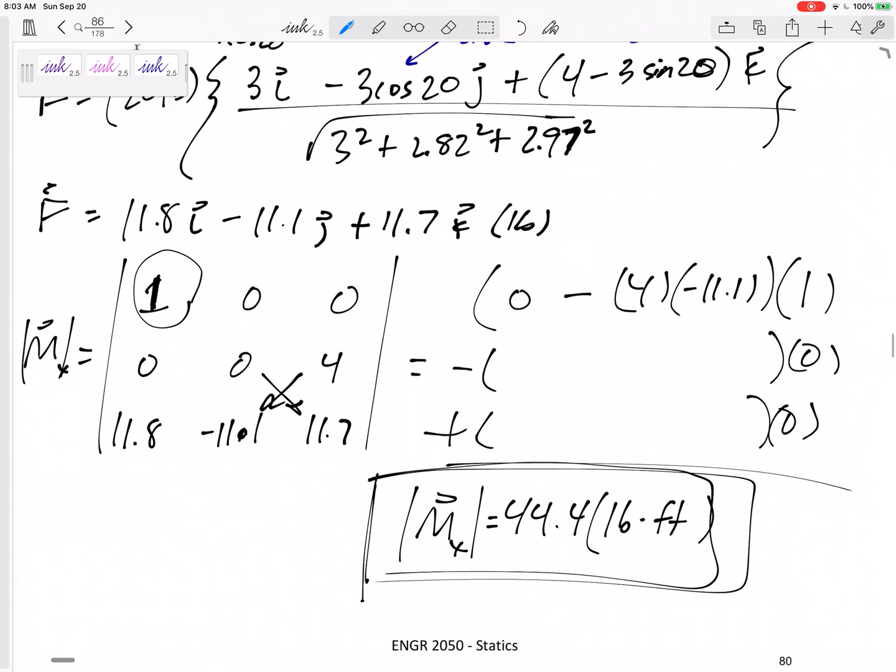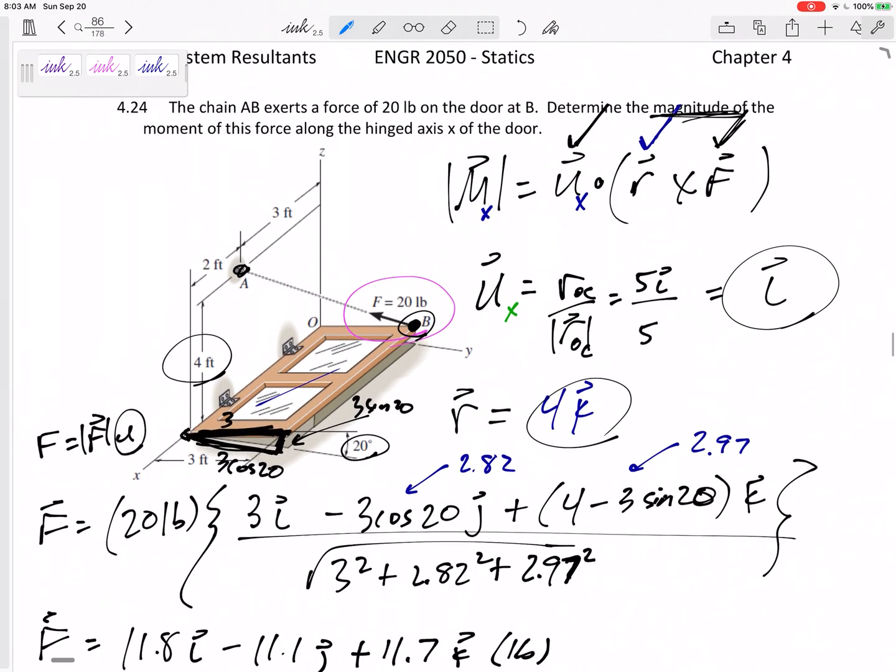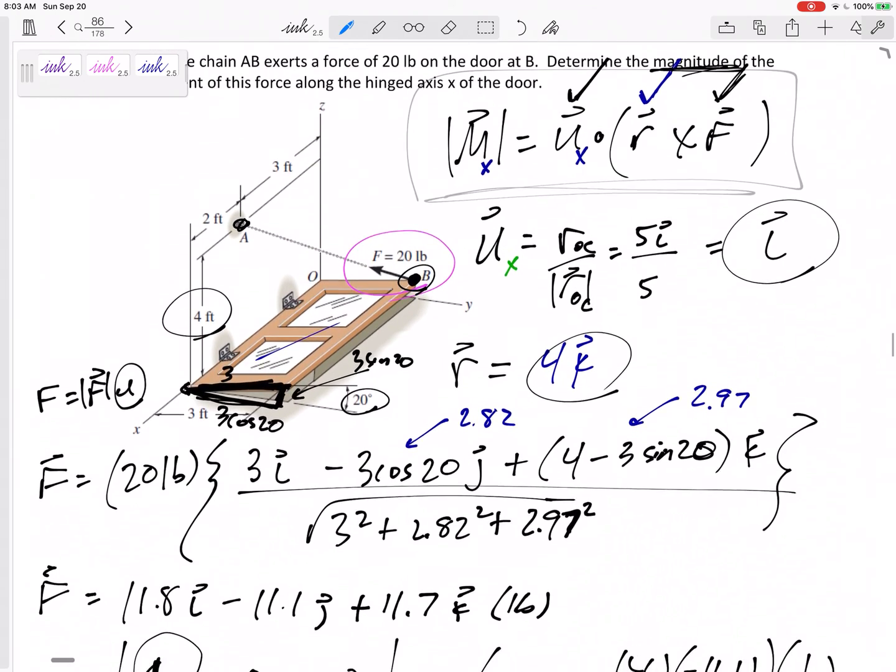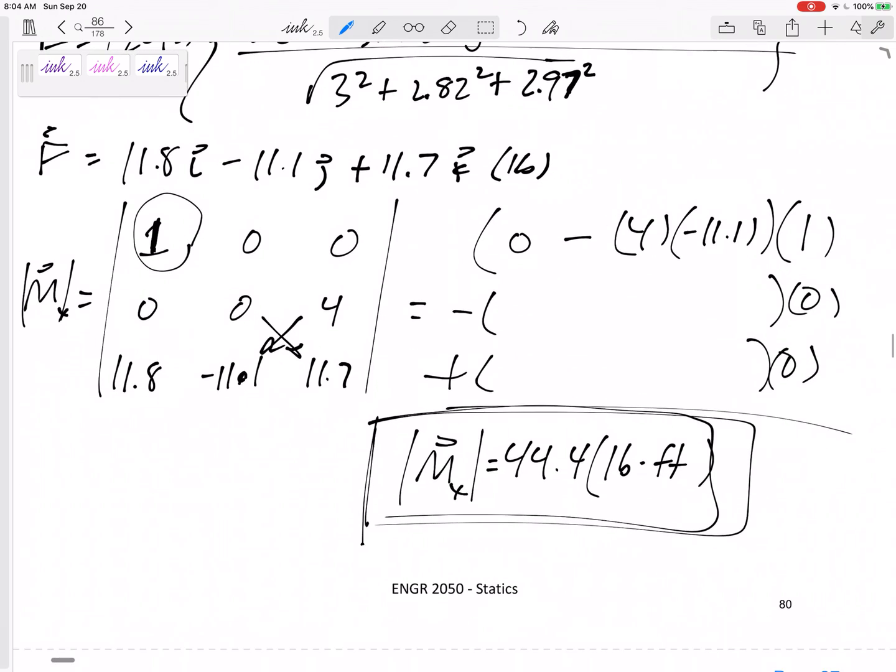But these are moment about an axis. There's my equation right there. The magnitude equals u dot r cross F.